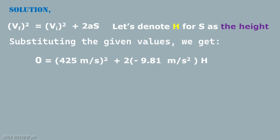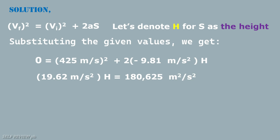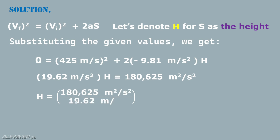Transposing the negative value to the left, we have 19.62 meters per second squared times the height equals 180,625 meters squared per second squared. Dividing both sides by 19.62, H equals 180,625 divided by 19.62, giving H equals 9,206.16 meters, or height equals 9,206 meters.